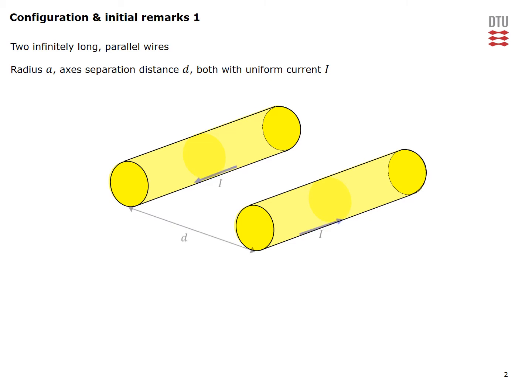The axis of these wires are separated by distance d and each of the wires carries a current I which is uniformly distributed over the cross-section of the wires.